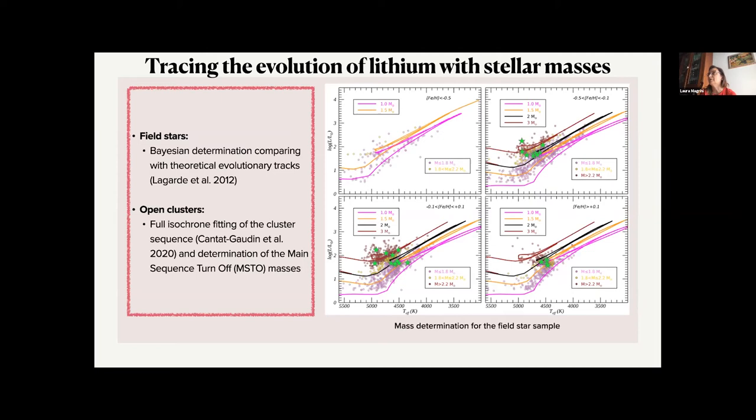For open clusters, we took advantage of the fit of the full sequence of the cluster. So by using the isochrone fitting, using the data of Gaia from the paper of Cantat-Gaudin, we could derive the age and the masses of the open clusters. So we have secure determination of the masses of both the cluster stars and the field stars.